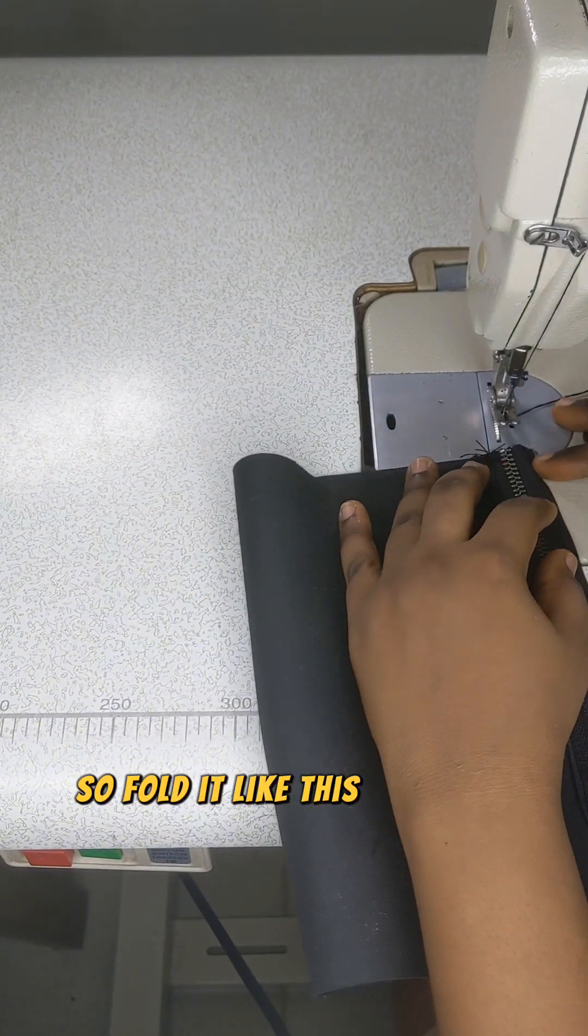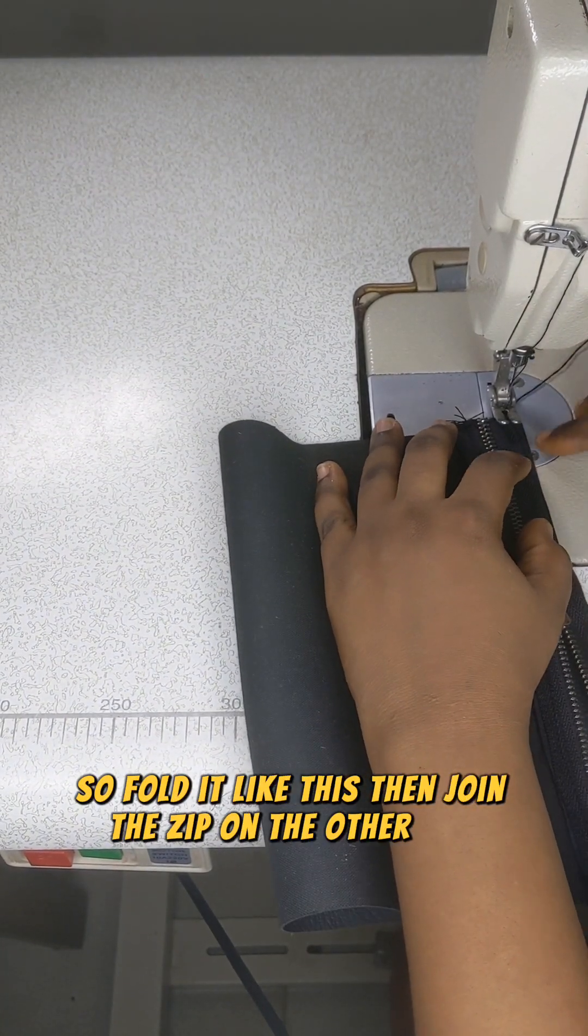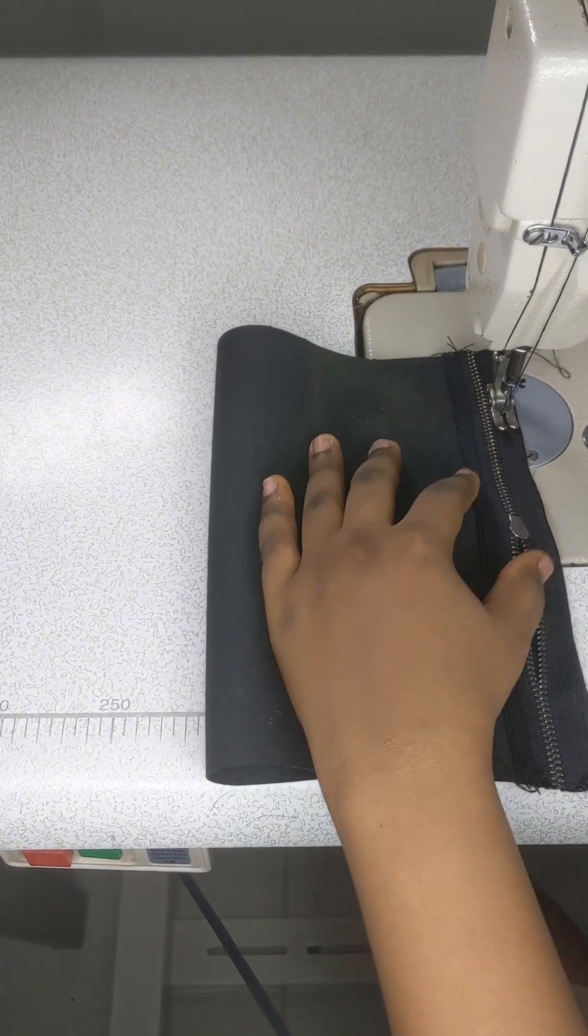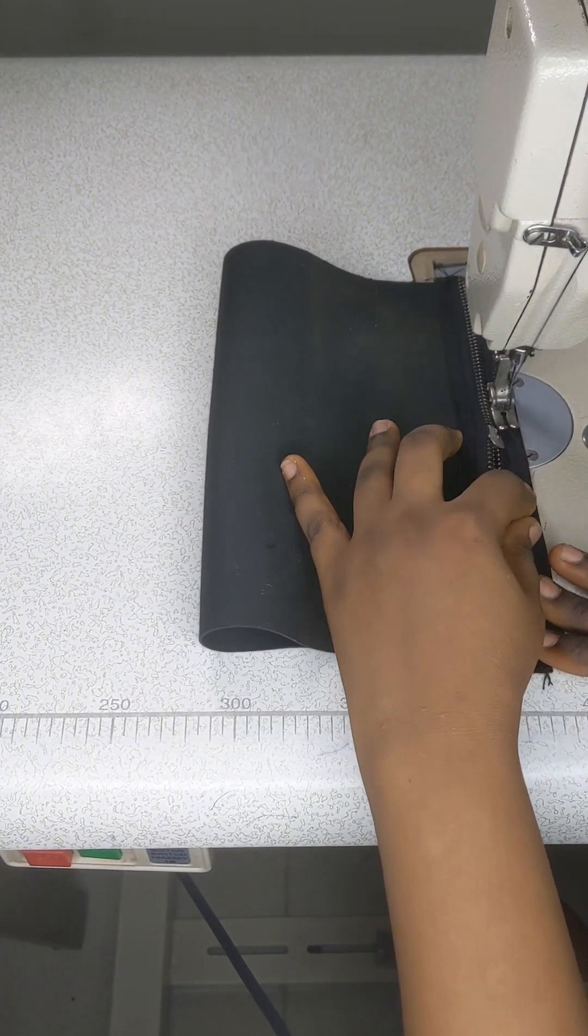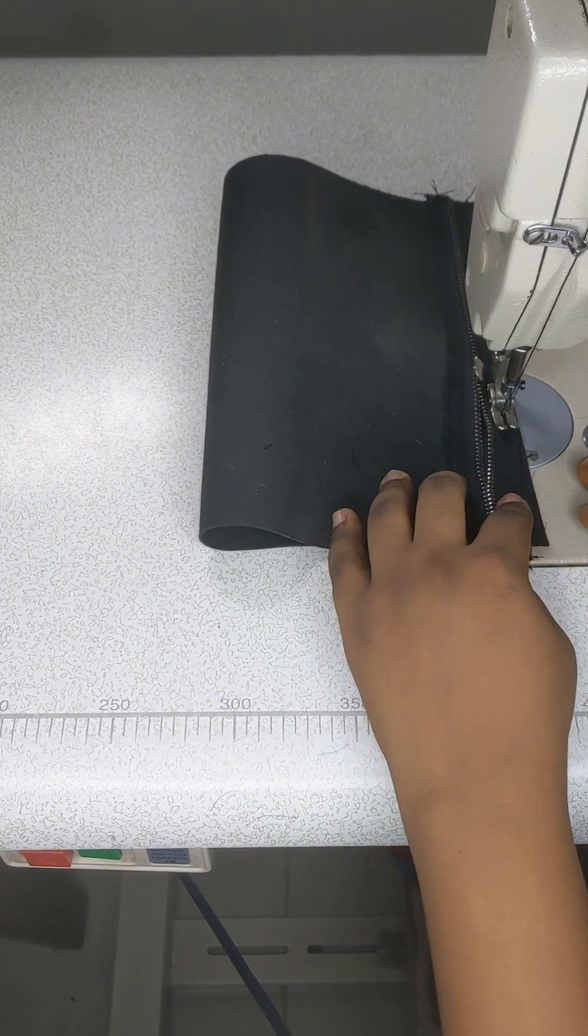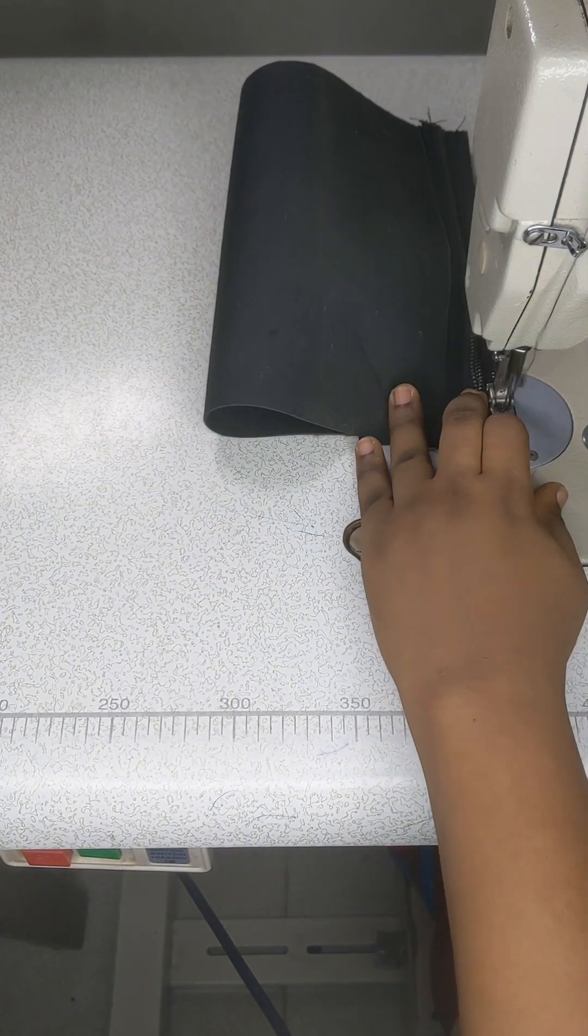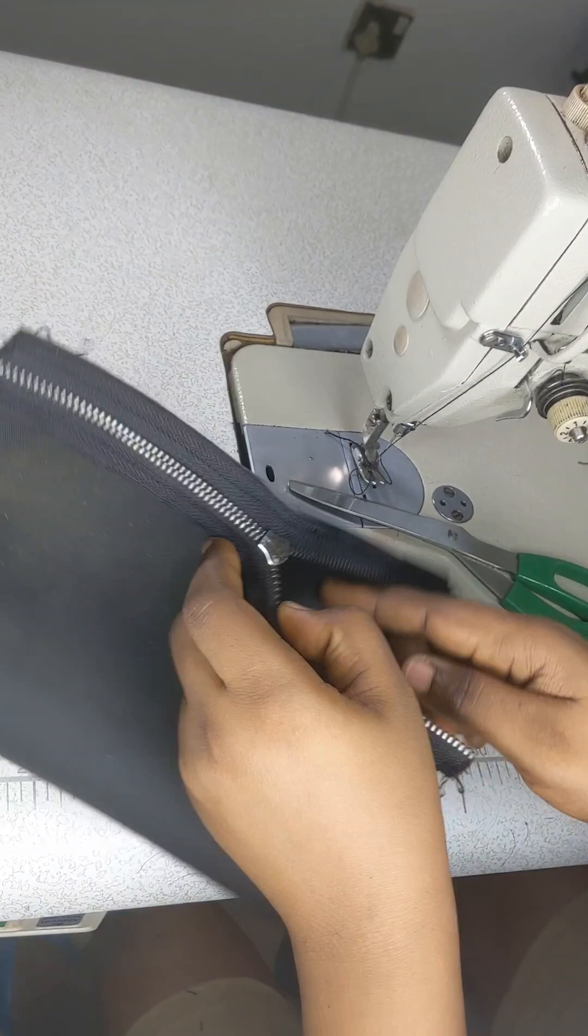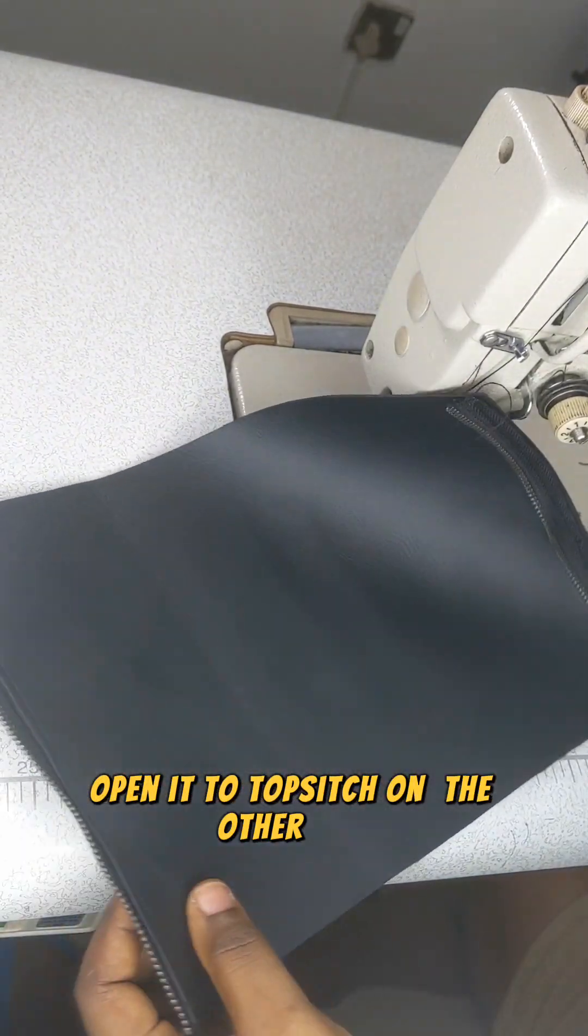So fold it like this, then join the zip on the other end. Open it to the top stitch on the other side.